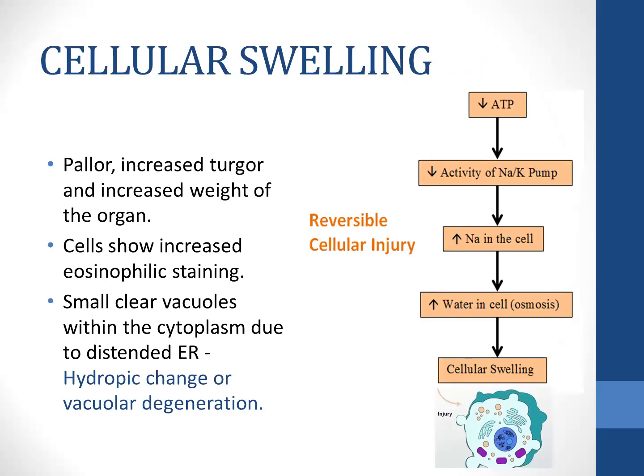Ischemia and hypoxia can lead to cell injury because they reduce oxidative phosphorylation, which reduces the ATP being produced. When ATP is reduced, it leads to decreased activity of the sodium-potassium pump, so sodium increases in the cell. Increased sodium within the cell pulls water inside the cell by osmosis, and therefore the cell swells up.